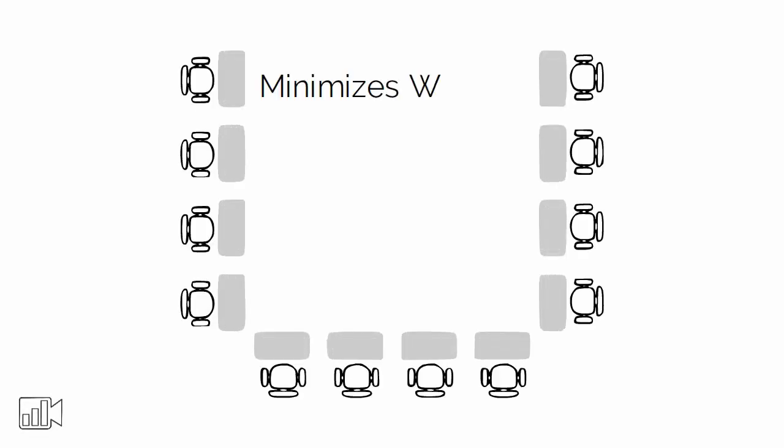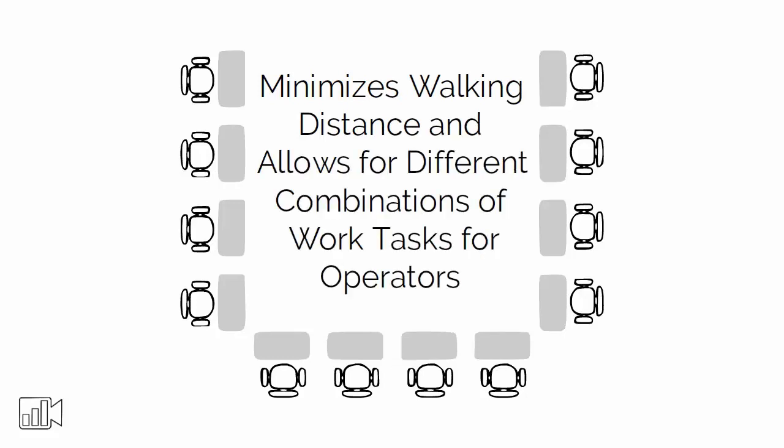This can be in the form of a U-shape, which is a common layout in lean production because it minimizes walking distance and allows for different combinations of work tasks for operators.